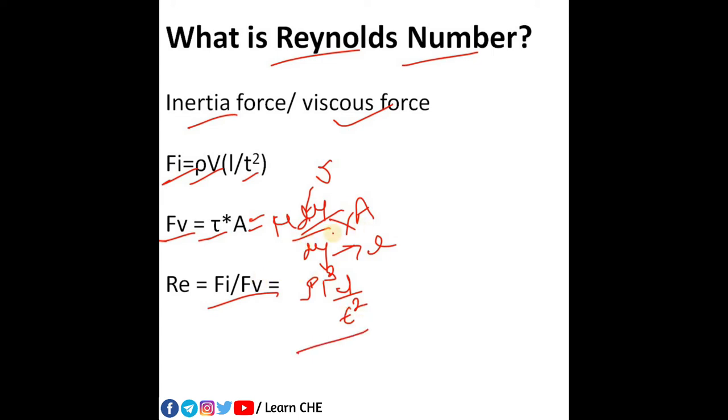Divided by here is mu, then V by L into L square. So L square, this will become L. Here you can see that L cube into L.